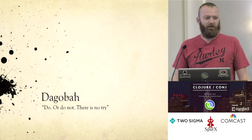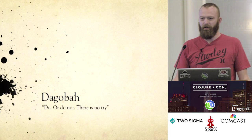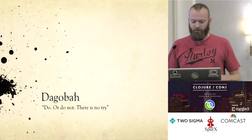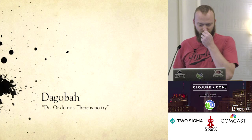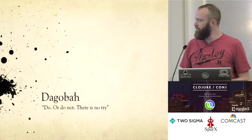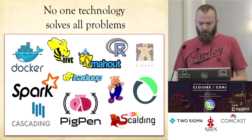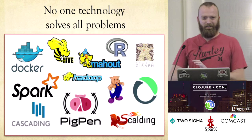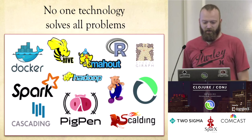I work at Netflix, and at Netflix we have a lot of data pipelines — big data pipelines that do anything from ETL to building machine learning models. One thing we've found more than anything is that there's no one solution that fixes all of the problems; nothing that does everything.